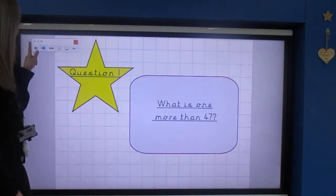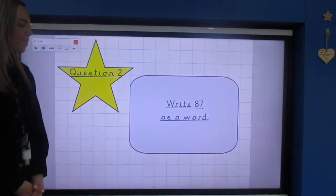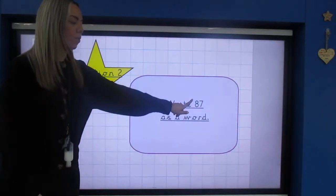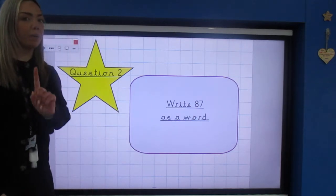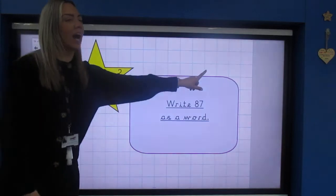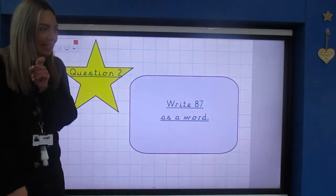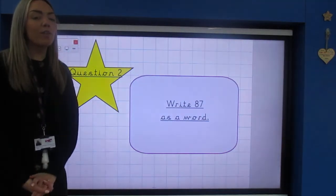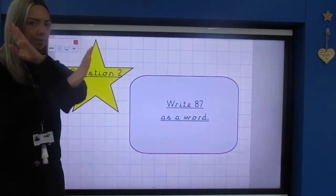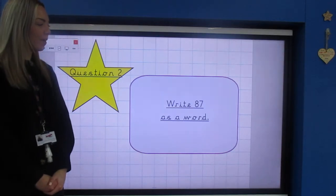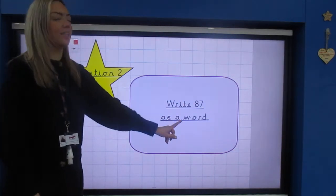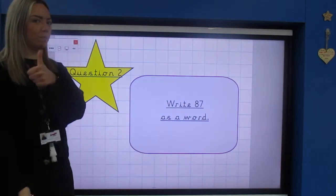Question two: write the number 87 as a word. Now for this question I am going to be quite a meanie and I am going to be looking for spelling. If it's not spelt correctly, no mark. I'm going to be really tough, so 87 as a word. Brilliant job.